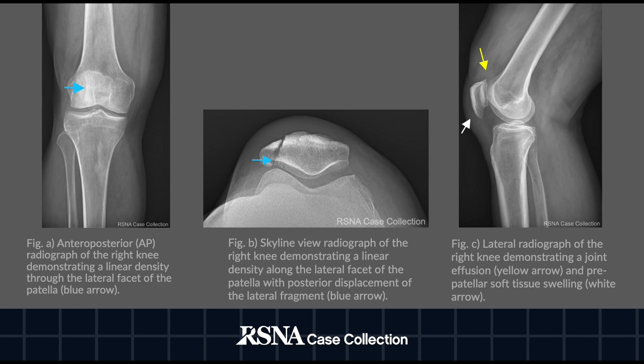The image on the left is an AP radiograph of the right knee demonstrating a linear density through the lateral facet of the patella, indicated by the blue arrow. The image in the center is the skyline view radiograph of the right knee showing the same linear density through the lateral facet of the patella. Posterior displacement of the lateral fragment can also be appreciated in this image. The image on the right is a lateral radiograph demonstrating a joint effusion indicated by the yellow arrow and prepatellar soft tissue swelling indicated by the white arrow.